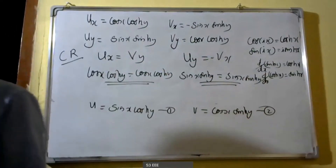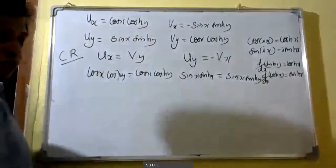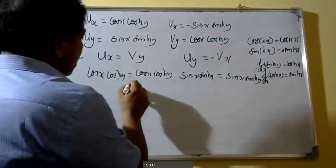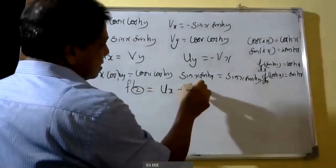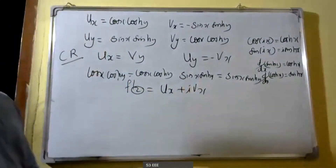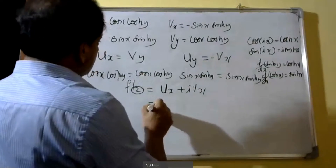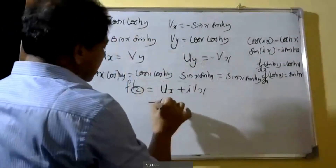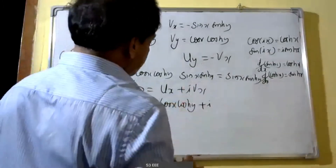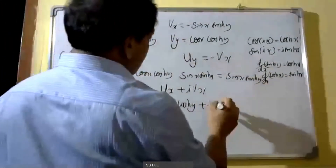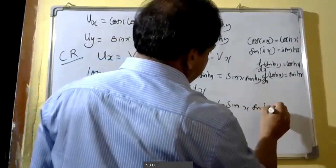Next we have to find out its derivative. We use the formula f'(z) = u_x + i·v_x. Here u_x = cos(x)·cosh(y) and v_x = -sin(x)·sinh(y). So f'(z) = cos(x)·cosh(y) + i·(-sin(x)·sinh(y)).